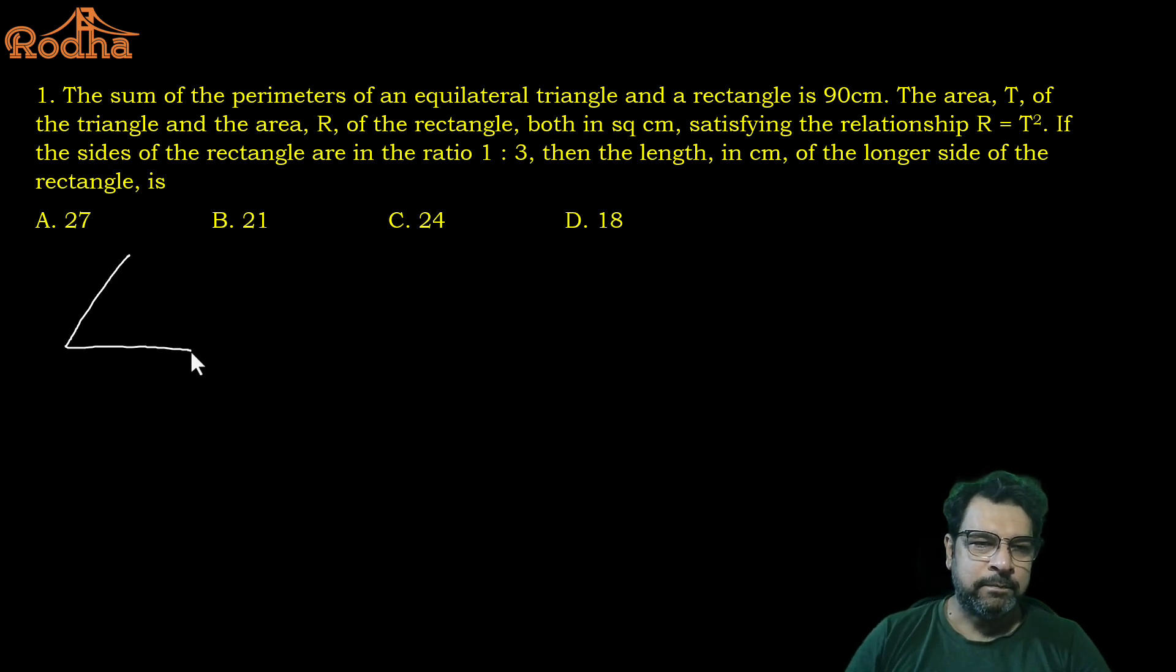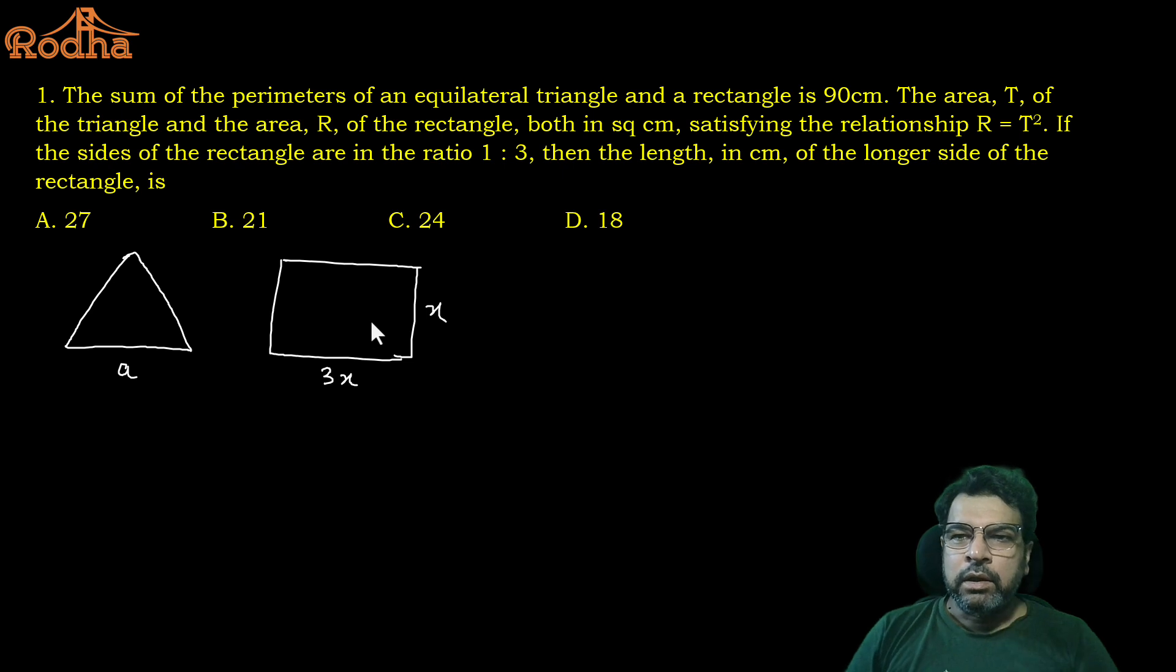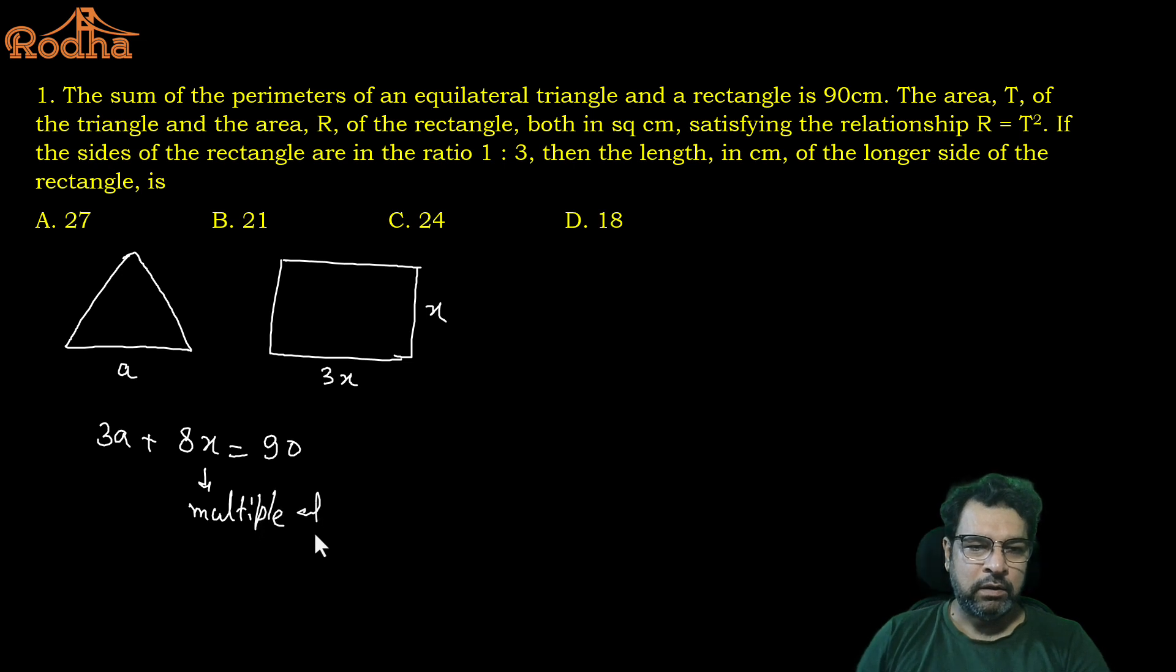The area T of the triangle and R of the rectangle, both in square centimeter, satisfying the condition R is equal to T squared. If the sides of the rectangle are in the ratio of 1 is to 3, then length of the longer side is, how to solve this question? So, we have an equilateral triangle and we have a rectangle. Ratio of the rectangle sides is 1 is to 3, so let's say this is X, this is 3X and this is, let's say, A.